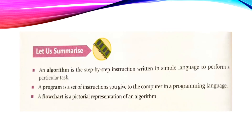Is lecture mein yeh humne understand kiya — summarize karein: Algorithm is step-by-step instruction written in a simple language to perform a particular task. Yaani algorithm mein computer language ki zaroorat nahin aati, hum kisi bhi simple language mein yeh steps likhte hain takay baad mein jab hum computer program banana hai us waqt koi dikkat na ho. Doosra dekha: a program is a set of instructions you give to the computer in a programming language — jaise QBasic, Java, C++ — kisi programming language mein likhte hain. Aur teesra point: flow chart is a picture of algorithm — algorithm ko hum symbols ke zariye se dikhate hain, is ko flow chart bolte hain.